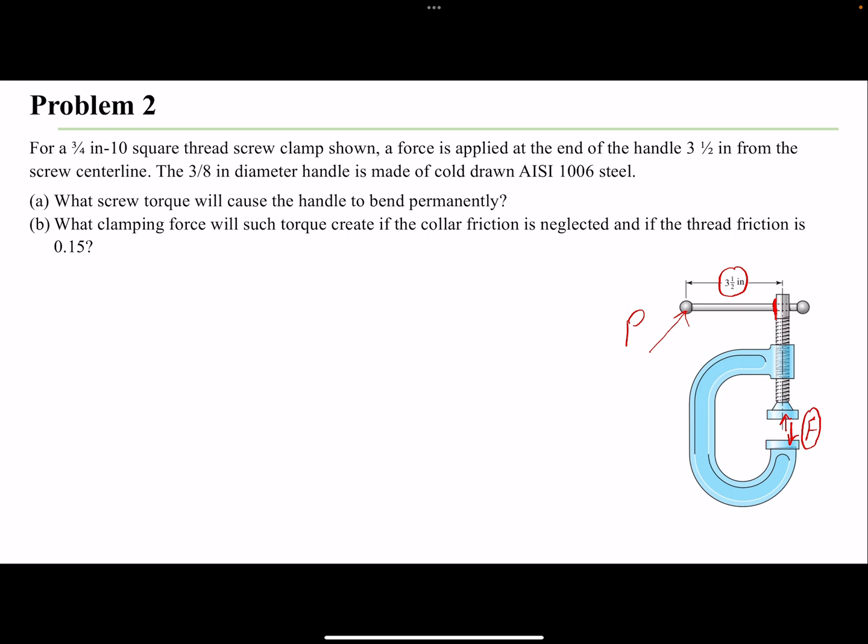The dimensions are given here - remember this is 3/4 of an inch and the handle is 3/8, so do not confuse the two dimensions. The second part: what clamping force will such torque create if the collar friction is neglected and if the thread friction is 0.15? Once we have the maximum TR, we can find the clamping force. Let's write our known parameters.